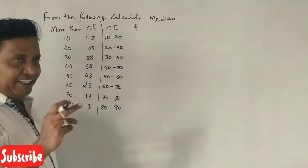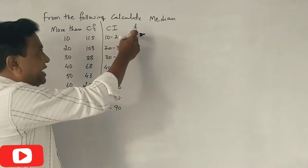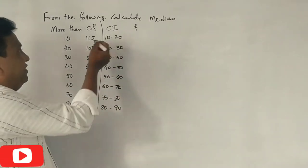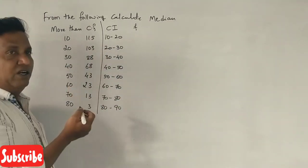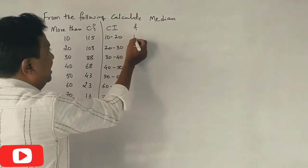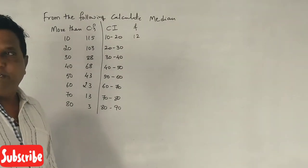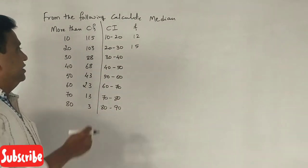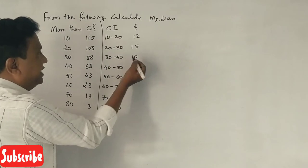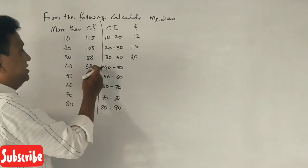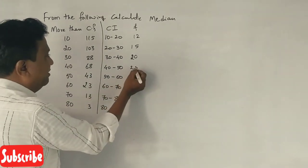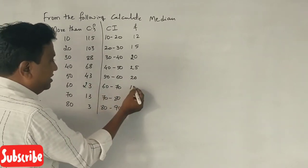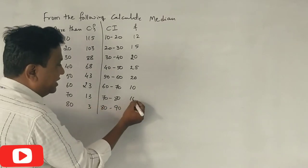But less than frequency. First number. First chain is 115 minus 103, which is 12. 103 minus 88 is 15. 88 minus 68 is 20. 68 minus 43 is 25. 43 minus 23 is 20. 23 minus 13 is 10. 13 minus 3 is 10.